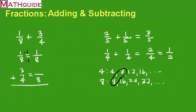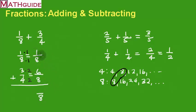This fraction isn't going to stay the same. 4 times what is 8? 4 times 2 is 8. If I multiply the bottom of the fraction by 2, I have to multiply the top of the fraction by 2 — that's called scaling the fraction up, the opposite of reducing. So 3 times 2 is 6, giving me 6 eighths. Now I have fractions with common denominators, so I can add them. 1 eighth plus 6 eighths — keep the same denominator and just add the numerators: 6 plus 1 is 7. So I get 7 eighths. I can't reduce it, so that's my final answer. 1 eighth plus 3 fourths is 7 eighths.